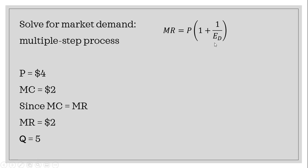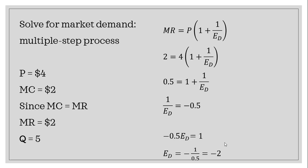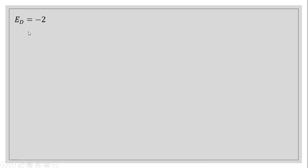Here is a key equation: marginal revenue equals P times (1 + 1/E_D), where P is the price and E_D is the elasticity of demand. Plugging in marginal revenue of $2 and price of $4, we solve for E_D. Dividing through by 4 gives one half on the left-hand side; subtracting 1 from both sides, then multiplying through by E_D and dividing by minus 0.5, we get a price elasticity of demand of minus 2.